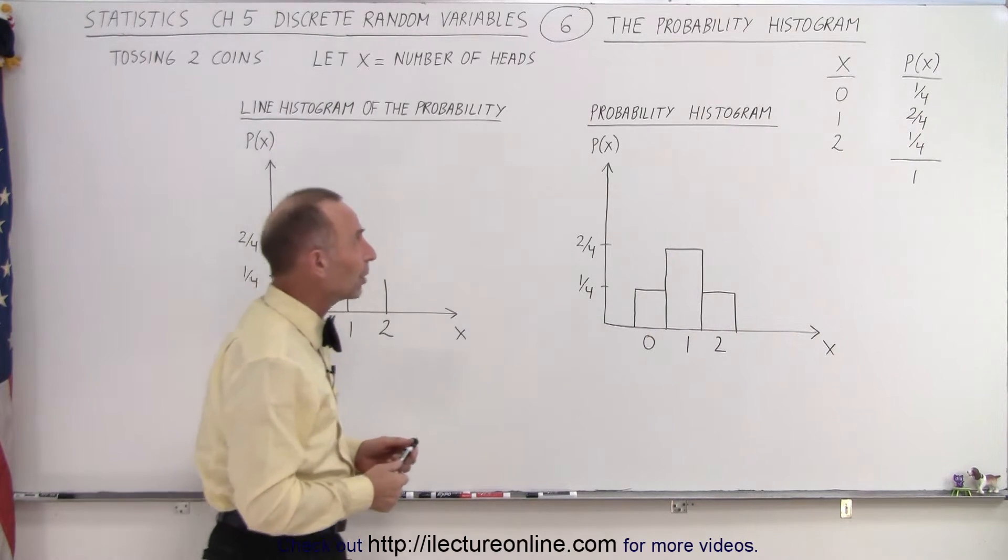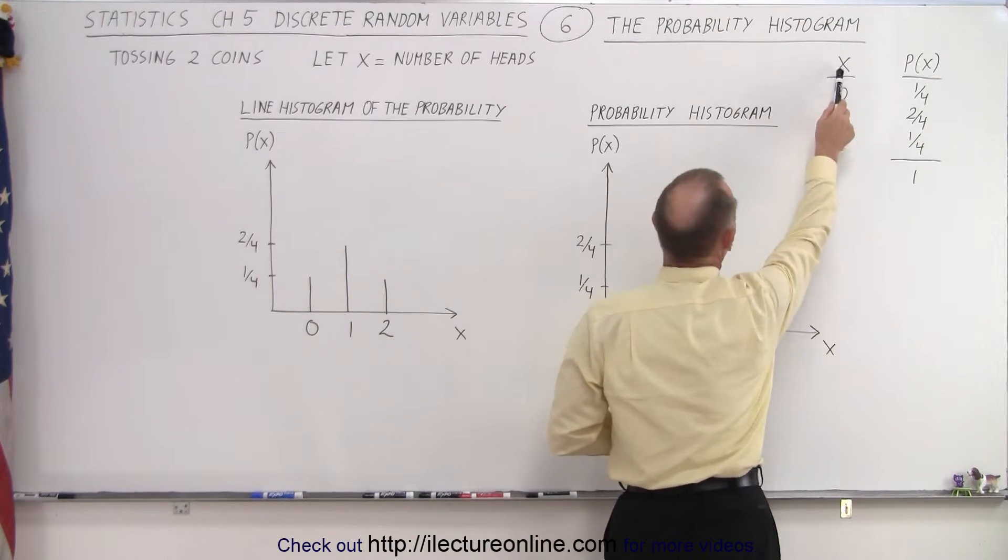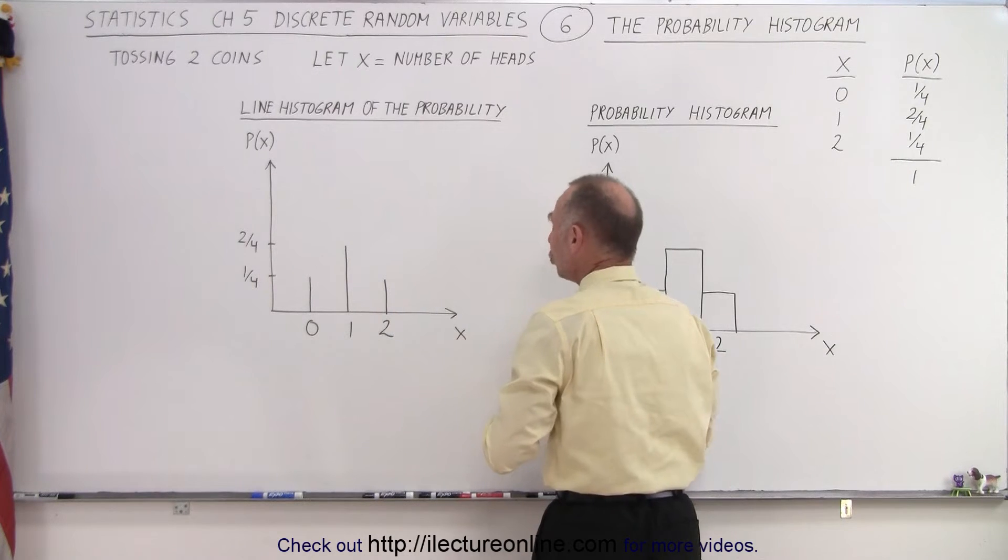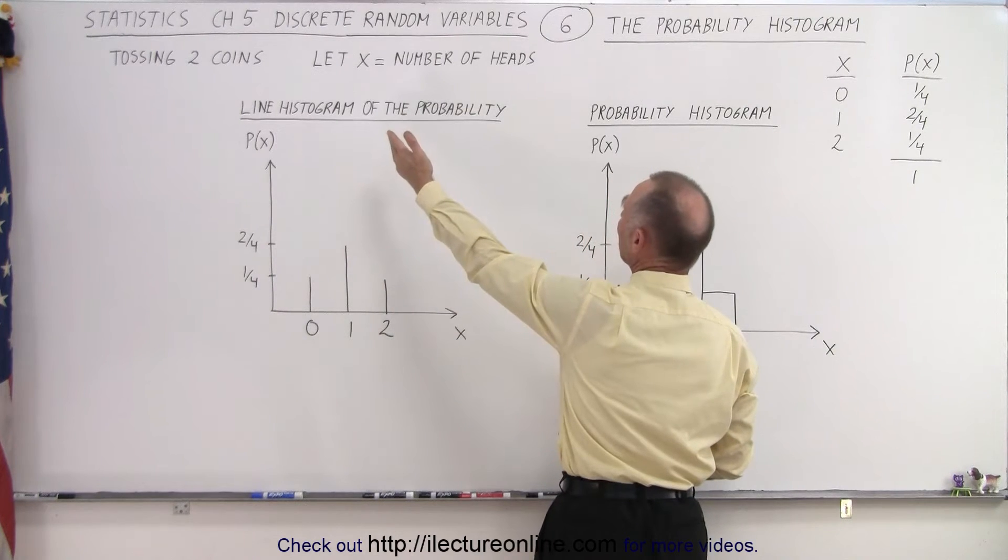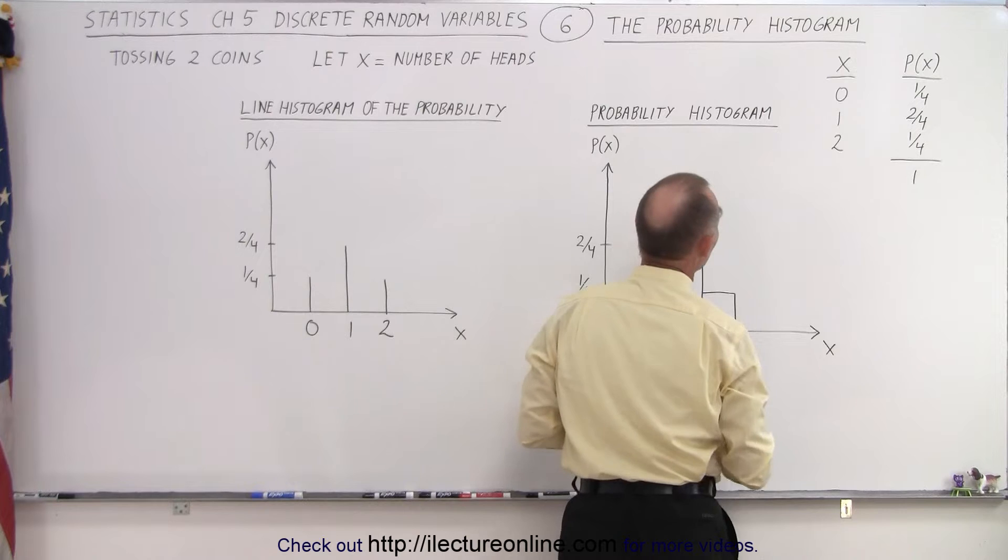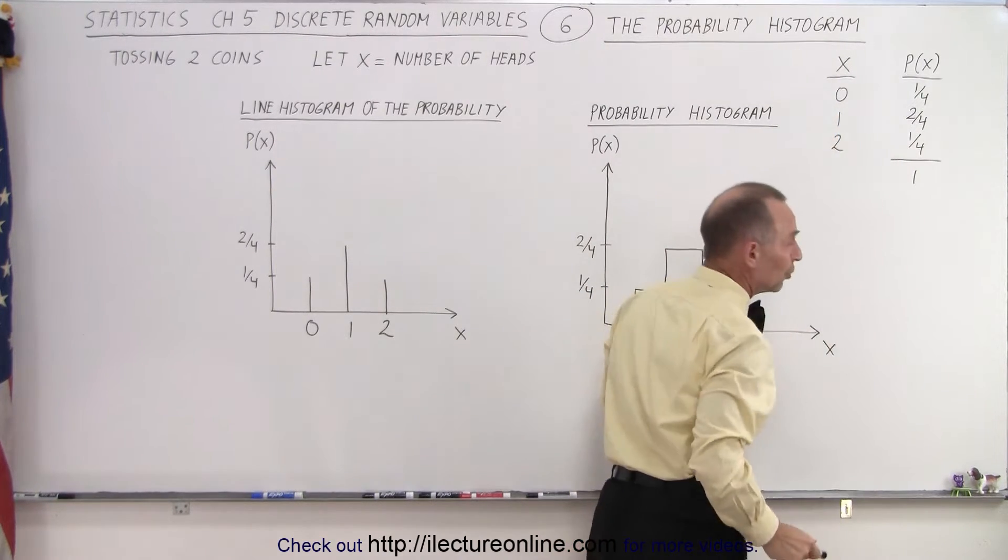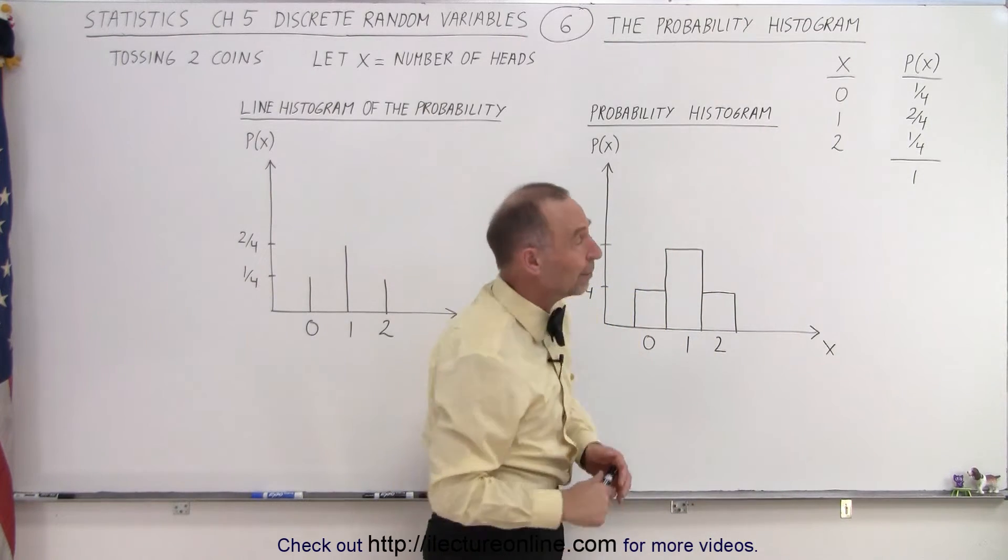Let's go back to our probability distribution. We have x as the variable, and we're using the example where we're tossing two coins. We're letting x equal the number of heads, so the possibilities are that x equals 0, x equals 1, or x equals 2. That makes it a discrete random variable.